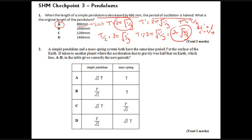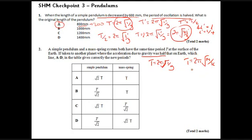Question 2: a simple pendulum and a mass-spring system both have the same period t at the surface of the Earth, then taken to another planet where the acceleration due to gravity is half that of Earth. Our two formulas are: for a pendulum, t = 2π√(l/g); for a mass-spring system, t = 2π√(m/k). The first thing to spot is that the mass-spring period doesn't depend on gravity at all.